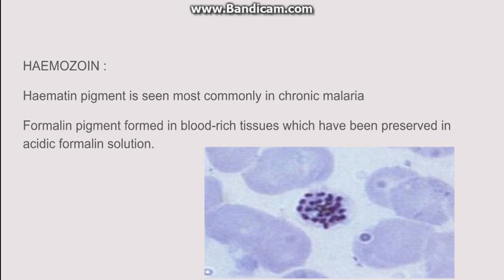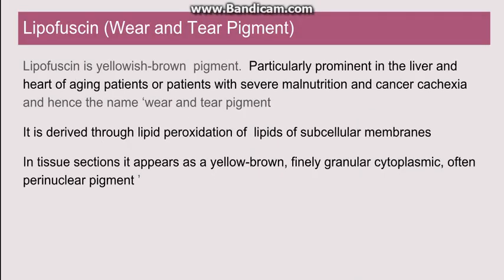Going to another pigment — hemozoin, which is seen mostly in chronic malaria. There is also the formalin pigment, which is seen when blood-rich tissues are preserved in formalin-formaldehyde solution.